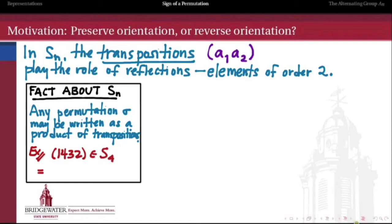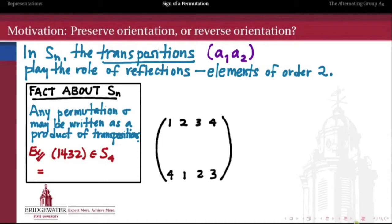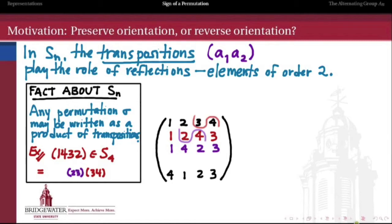For example, take the permutation 1432 in S4. We want to get from 1234 down to 4123 by applying a series of transpositions. First, swap the third and fourth entries to get 1243. Then swap the middle entries to get 1423. Then swap the first two entries to arrive at 4123. So 1432 can be written as the product of three transpositions: (34) followed by (23) followed by (12), reading from right to left.